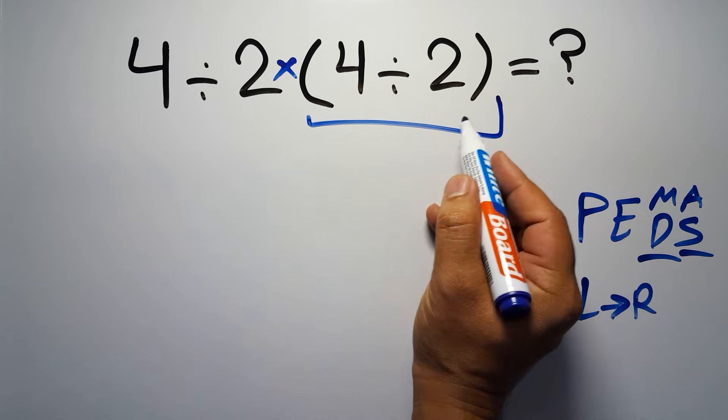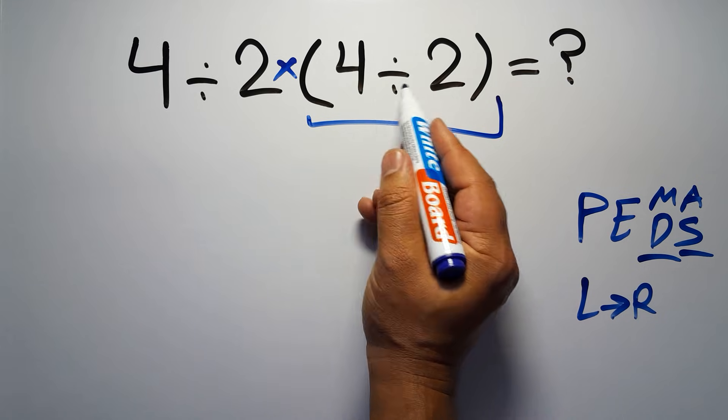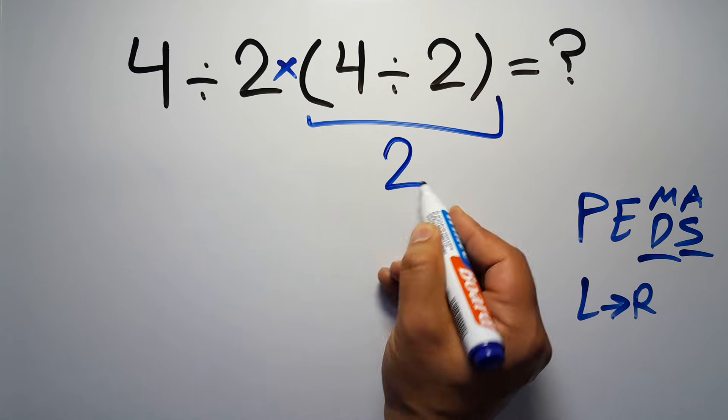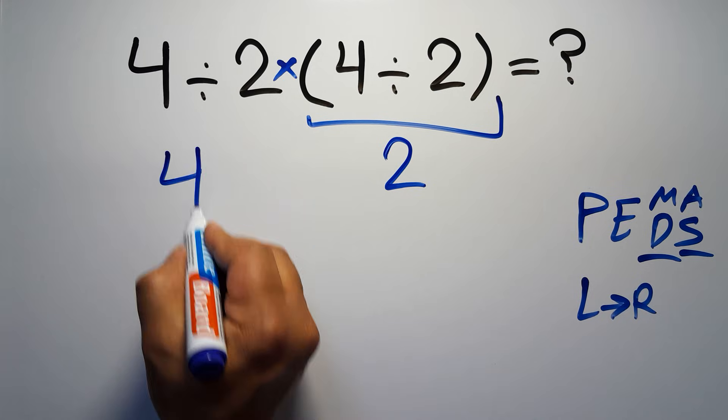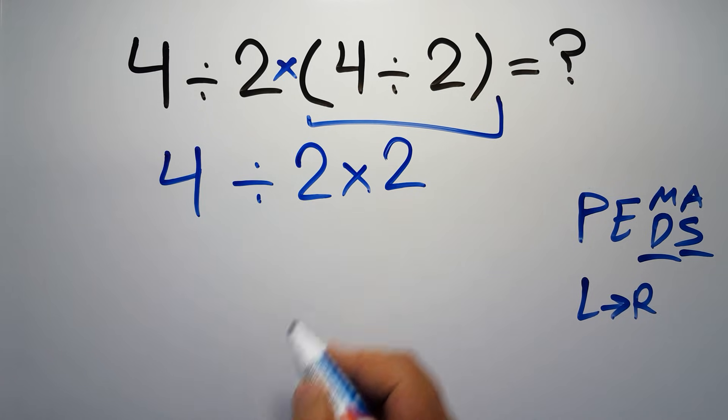So first this parentheses. Inside this parentheses we have 4 divided by 2 which equals 2. So 4 divided by 2 then times 2.